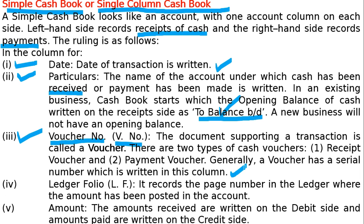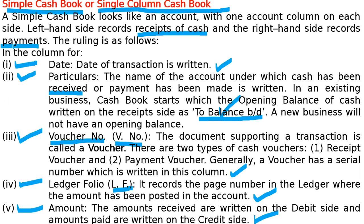The receipt voucher and payment voucher — cash payment and receipt — come next. The fourth column is the ledger folio, which records the page number in the ledger where the amount has been posted. The fifth and last column is the amount: amounts received are written on the debit side and amounts paid are written on the credit side. So there are five columns on each side — debit side and credit side — and this is your cash book format.